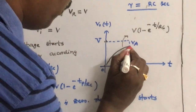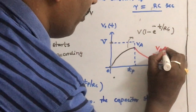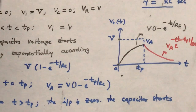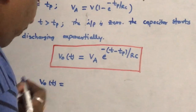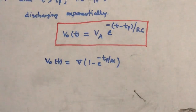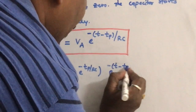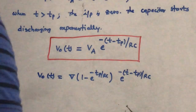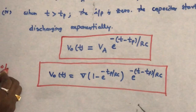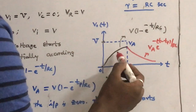The output starts decreasing exponentially according to the formula: Va into e power minus (T minus Tp) by RC. Substituting Va, V0 of T equals V into (1 minus e power minus Tp by RC) into e power minus (T minus Tp) by RC. This is the very important expression you have to derive in the examination. This is the output voltage expression or voltage across the capacitor, and this is the waveform showing the response of capacitor for pulse input.